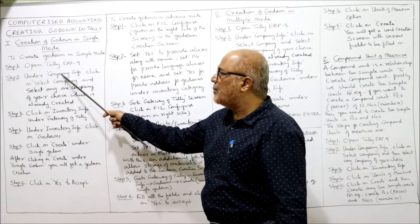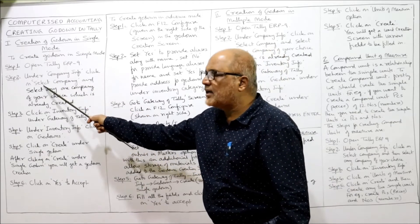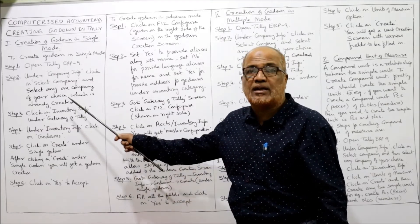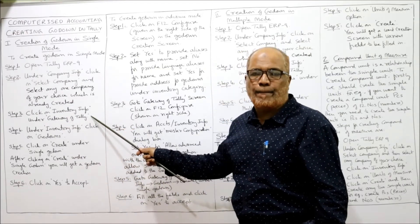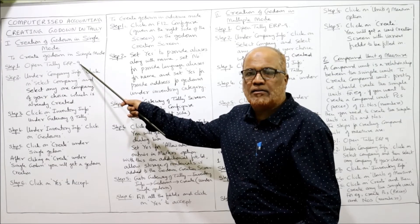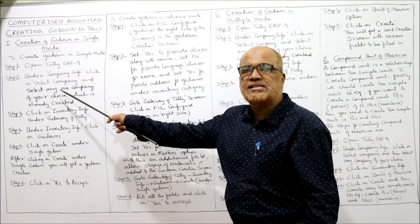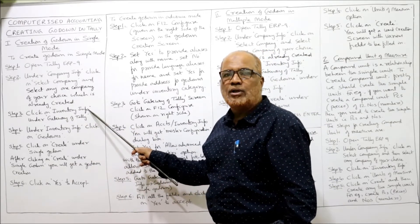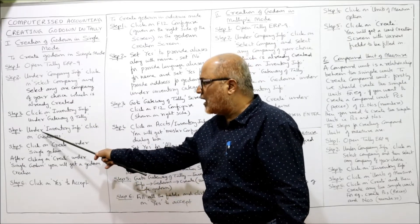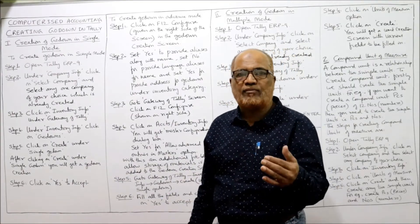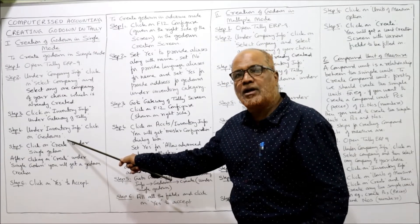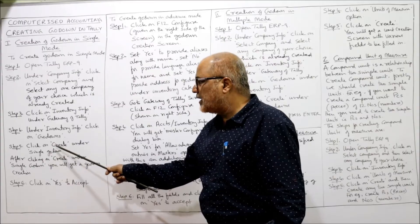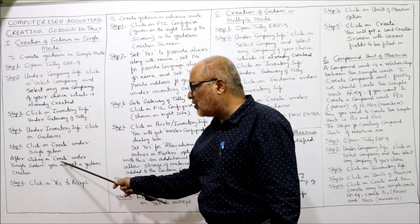Under single mode, simple method, there are six steps. Step 1: Open Tally ERP 9 as usual. Step 2: Under Company Info, click 'Select Company' and select any company of your choice — the company must already be created. Step 3: Click on Inventory Info. Step 4: Under Inventory Info, click on Godowns. Step 5: Click on Create under Single Godown.